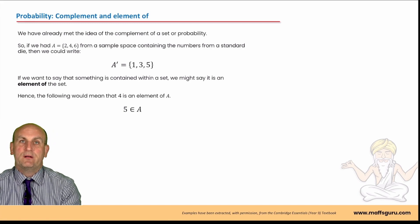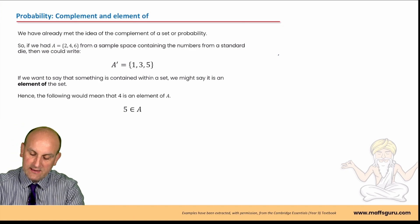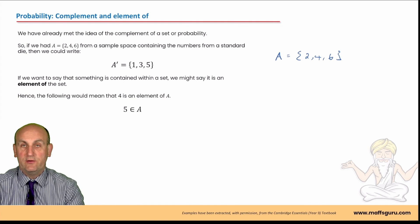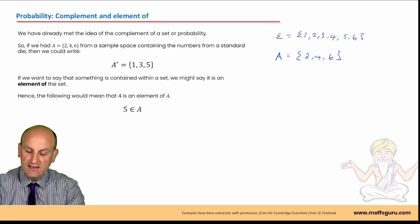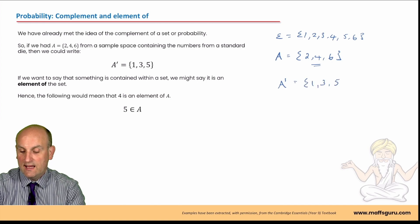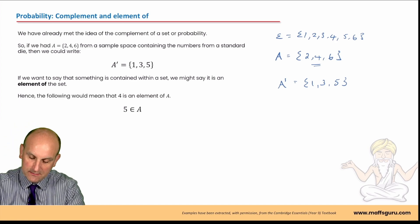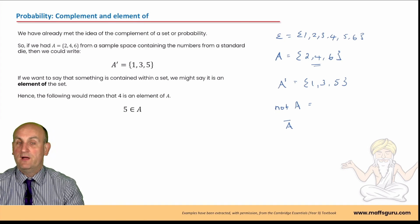The complement is basically the opposite of. So if we had the numbers two, four, and six taken from a sample space of one two three four five and six, and those numbers are A, then the numbers that are not A would be one, three, and five. The complement of A is basically all of the numbers that are not A. We could write that as 'not A equals' or as A with a bar over the top.